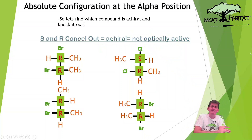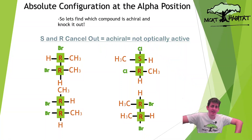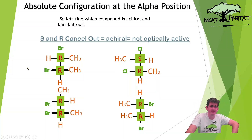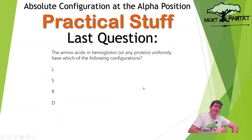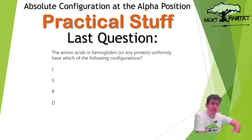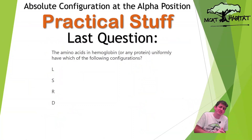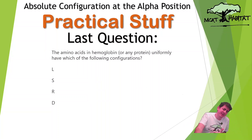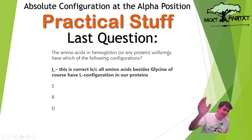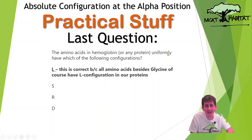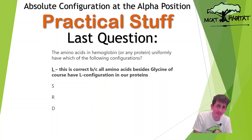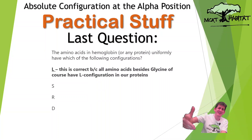Everything else, if you check them, will be R and R, making all the other three optically active chiral molecules. Lastly, question: the amino acids in hemoglobin or any protein have which of the following configurations — L, S, R, or D? The answer is L, because all amino acids have L configuration, besides glycine of course.